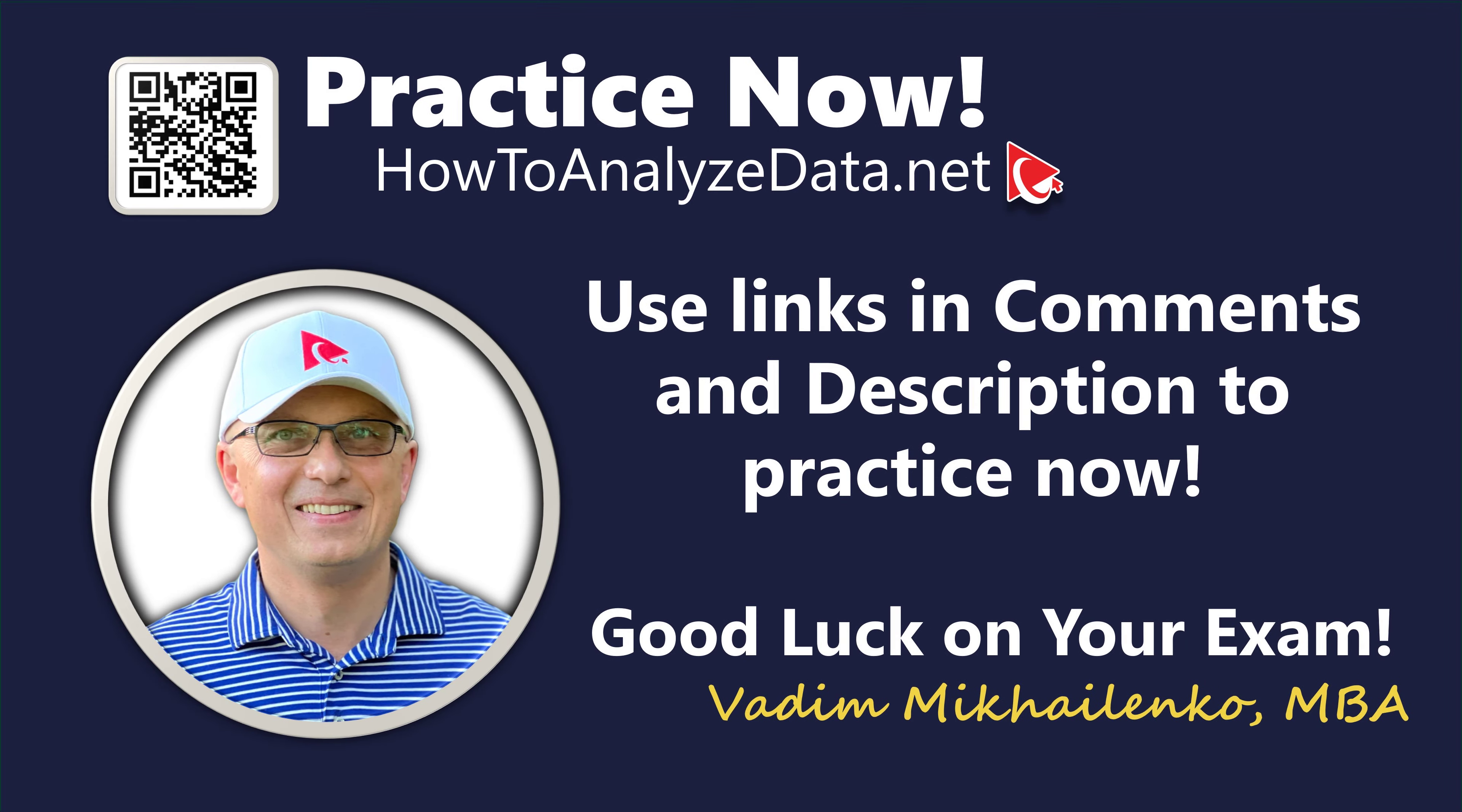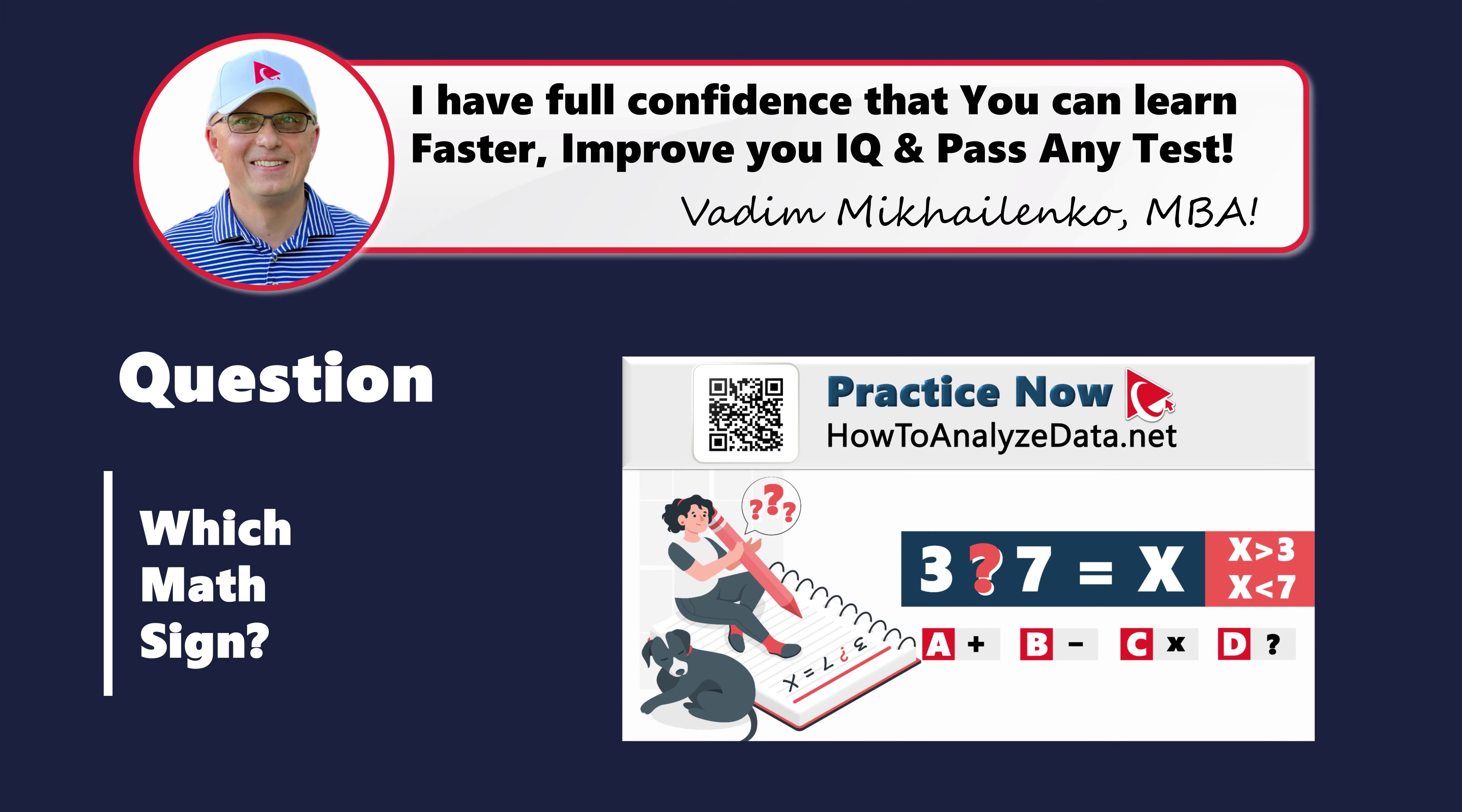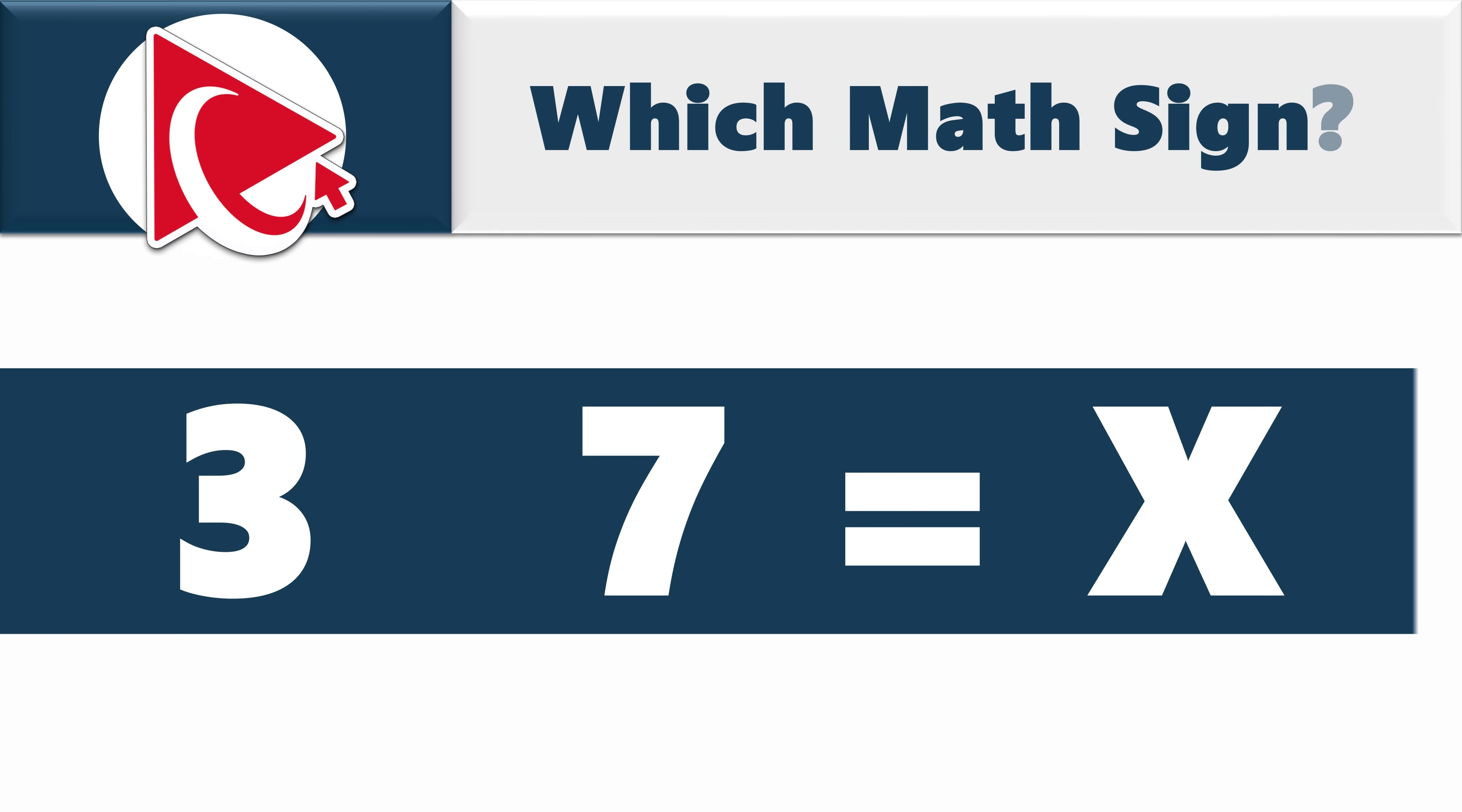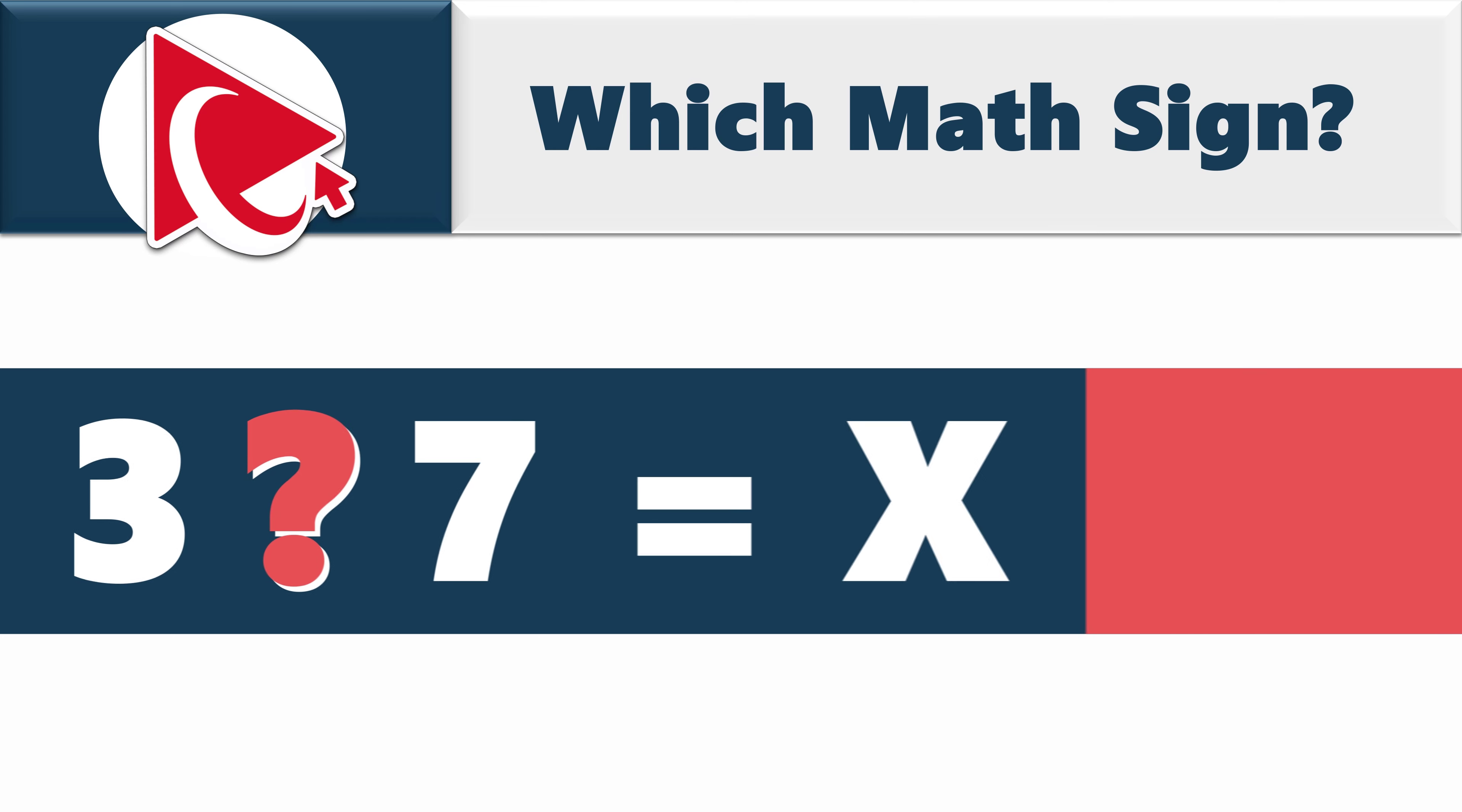You might disagree, but I gotta tell this to you anyway. Trying to understand this question is like attempting to teach a dog advanced calculus, confusing for everyone involved. But hey, once you coach your dog, you can definitely call the audience for help. Your mission in this adventure is to find a special symbol to put between 3 and 7. This magical symbol should make a number that is more than 3, but less than 7. Sounds tricky, right?